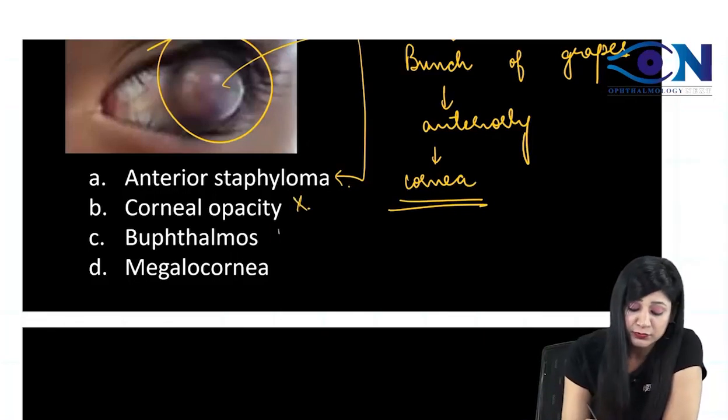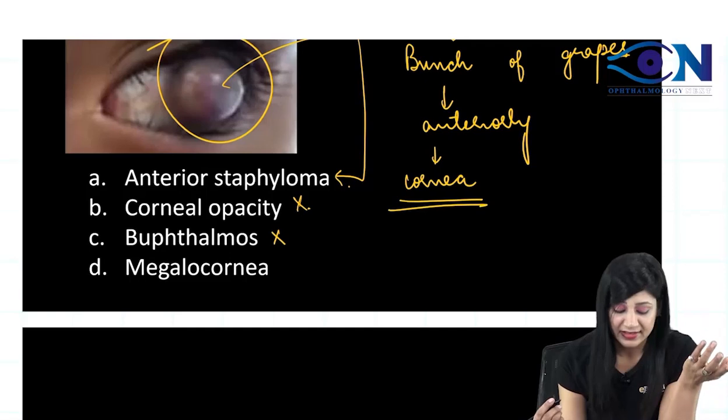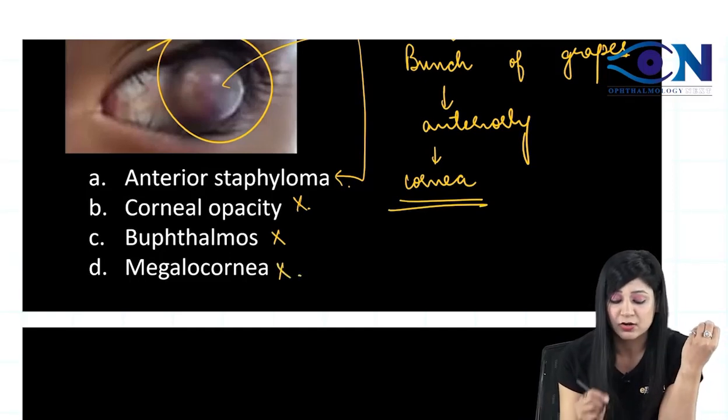You can see it is not opacity. Buphthalmos, we have already dealt, buphthalmos was a blue baby boy, that is not there. Megalocornea is again not there.